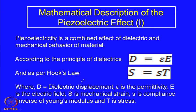When all the terms are explained: D is the dielectric displacement, ε is the permittivity, capital E is the electric field, capital S is the mechanical strain, small s is the compliance (inverse of Young's modulus), and capital T is the mechanical stress. All these parameters are involved when a piezoelectric system is functioning, and some of them are coupled together — which makes things a little complex.